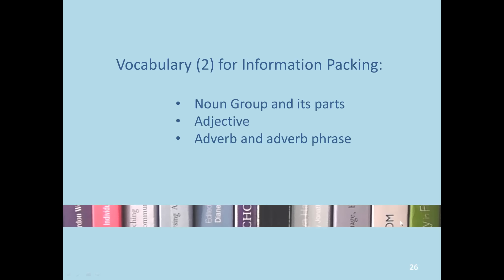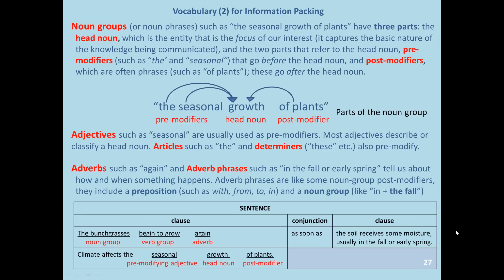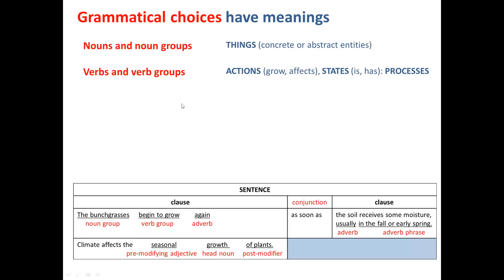A little bit more vocabulary now. We'll look at the noun group and its parts: adjective, adverb, and adverb phrase. These words should help you describe and talk about your choices for either concrete or abstract expression. It's important to keep in mind that it's not the grammatical words themselves that are important, but what they mean. Grammatical choices have meanings.